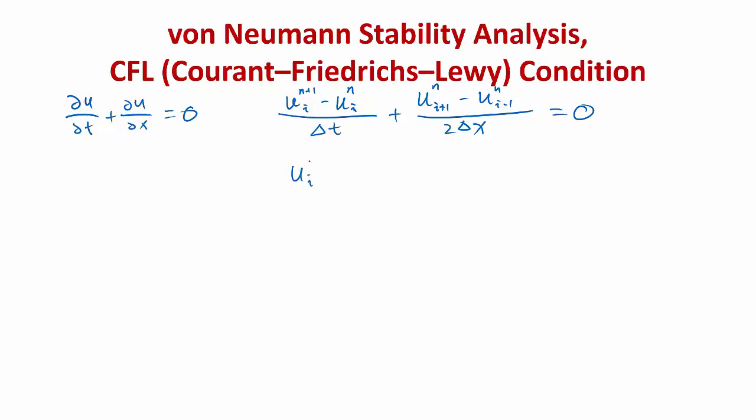Moving all the known terms to the right-hand side and leaving only the unknown on the left-hand side, we get u i n over delta t minus u n i plus one minus u n i minus one. If you are using an implicit scheme, you have more terms on the left-hand side and fewer on the right-hand side. In project two, you will see we can use discretization with mixed explicit and implicit schemes — some differential operators discretized at step n, some at step n plus one, moving some terms to each side.